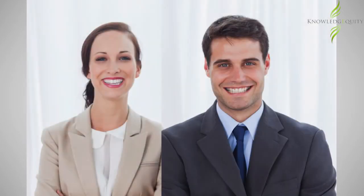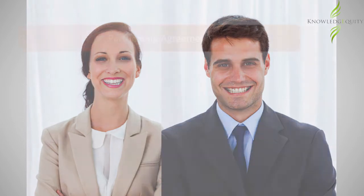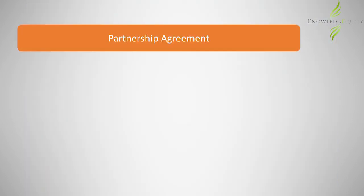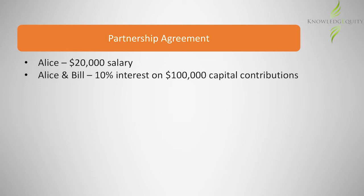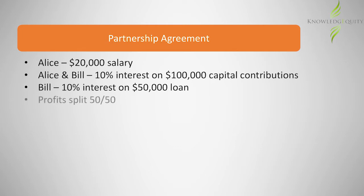How do these affect how the partners are taxed? Alice and Bill start up a partnership. The partnership agreement states that Alice is to receive a salary of $20,000 a year. Alice and Bill are to receive 10% interest on their capital contributions of $100,000 each. Bill is to receive 10% interest on his $50,000 loan to the partnership. Profits are to be split 50-50.